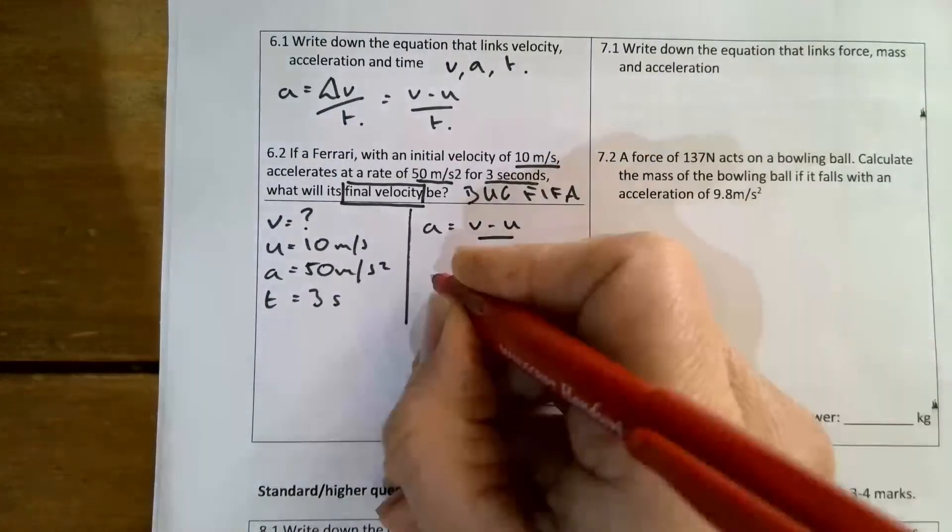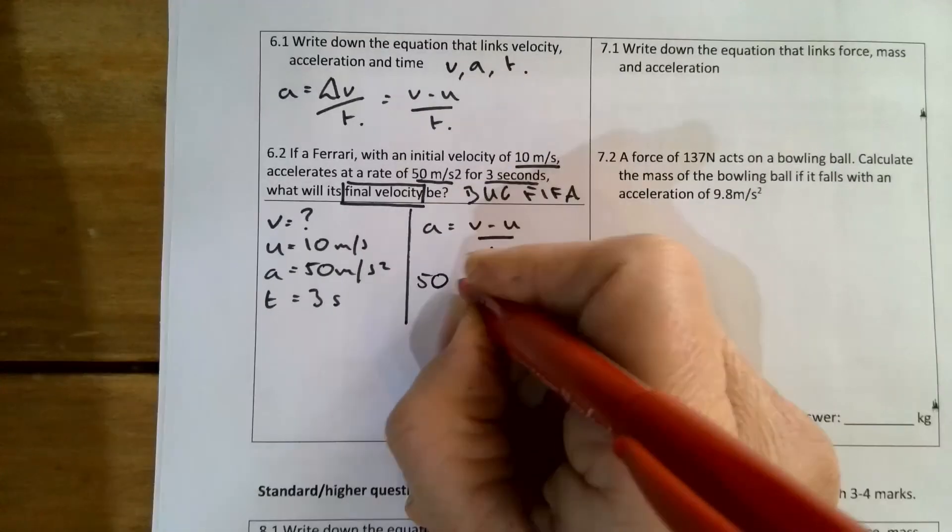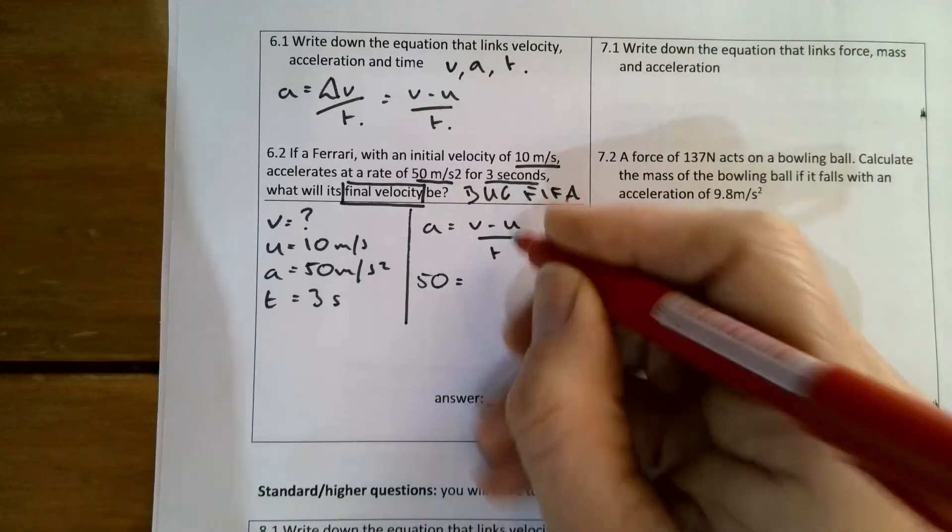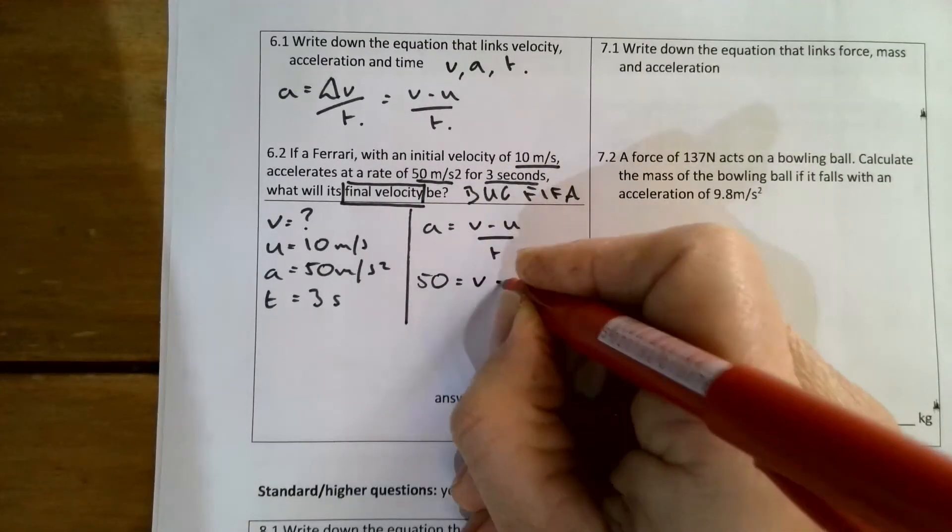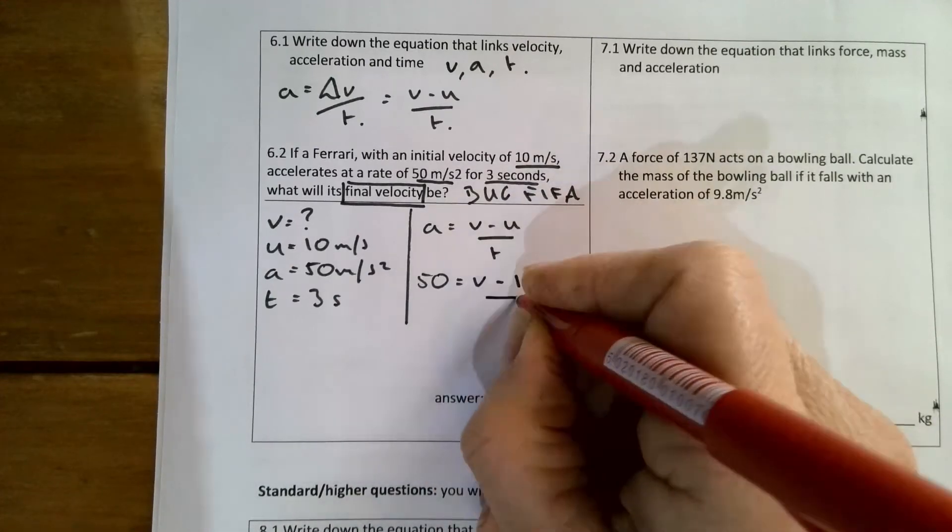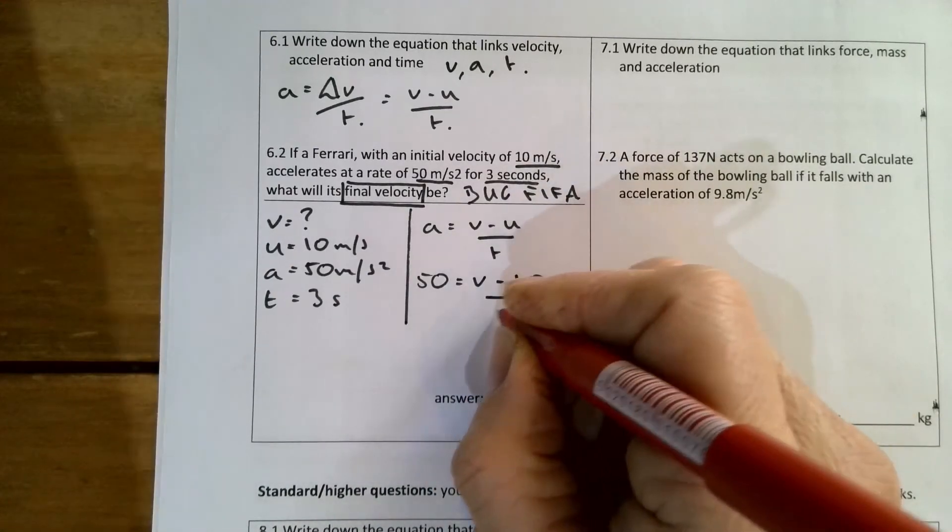Now I'm going to insert my data. I've got 50 equals v minus u, which is 10, all over time, which is three.